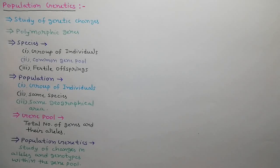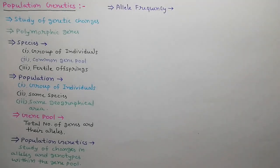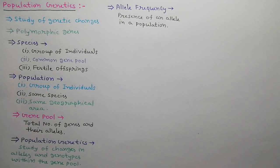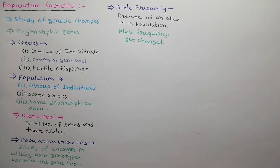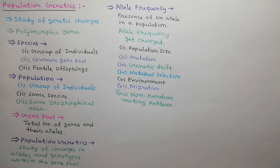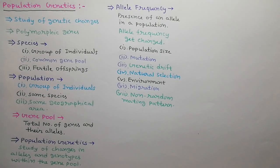Hence, in population genetics, we study about the changes in alleles and genotypes within the gene pool. Allele frequency is the presence of an allele in a population. With time, allele frequency of each population changes due to the following reasons: population size which changes continuously, mutation which is the main reason for new alleles entering the gene pool, genetic drift, natural selection, environment, migration, and non-random mating pattern.